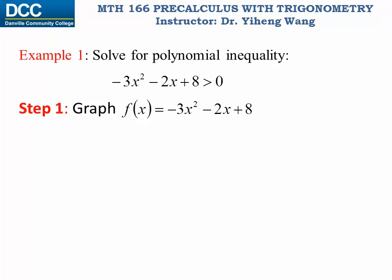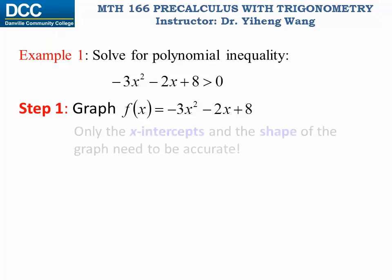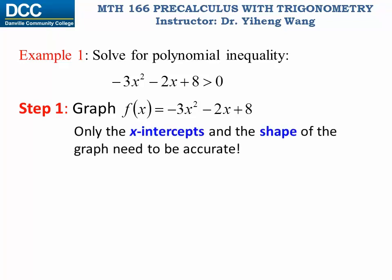For this graph, only the x-intercepts and the shape need to be accurate. In other words, the y-intercept, the vertex, the axis of symmetry, or any other aspect of the graph doesn't have to be accurate.